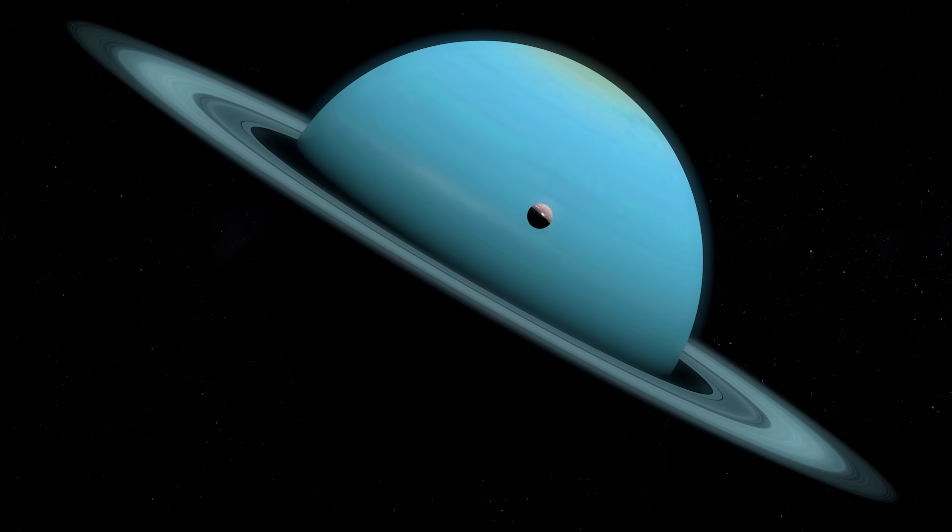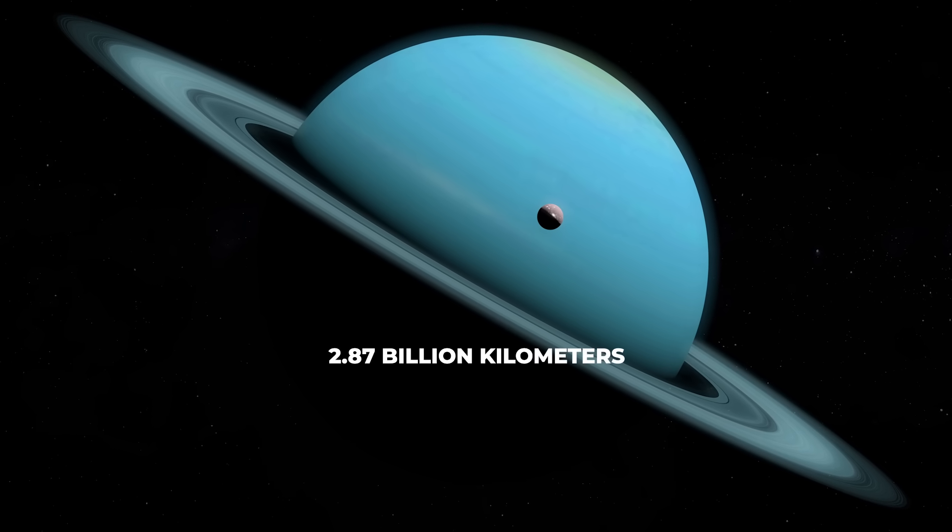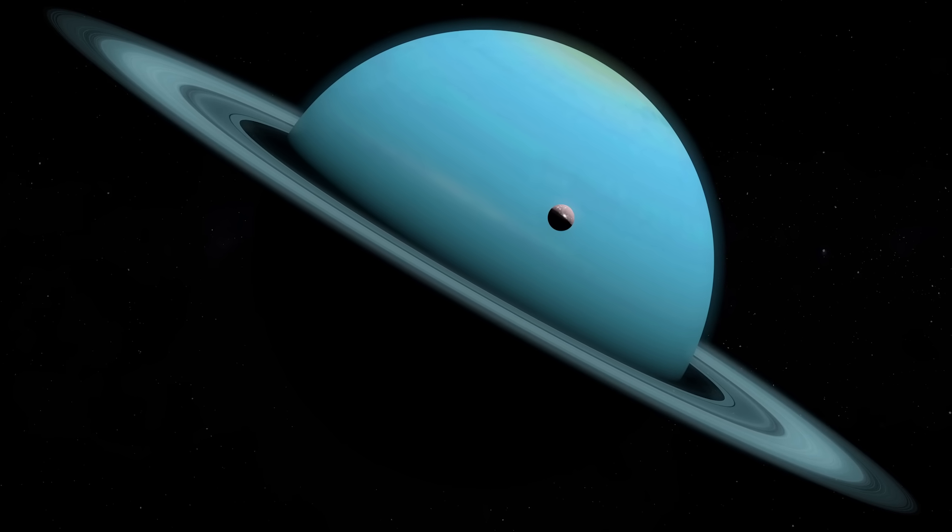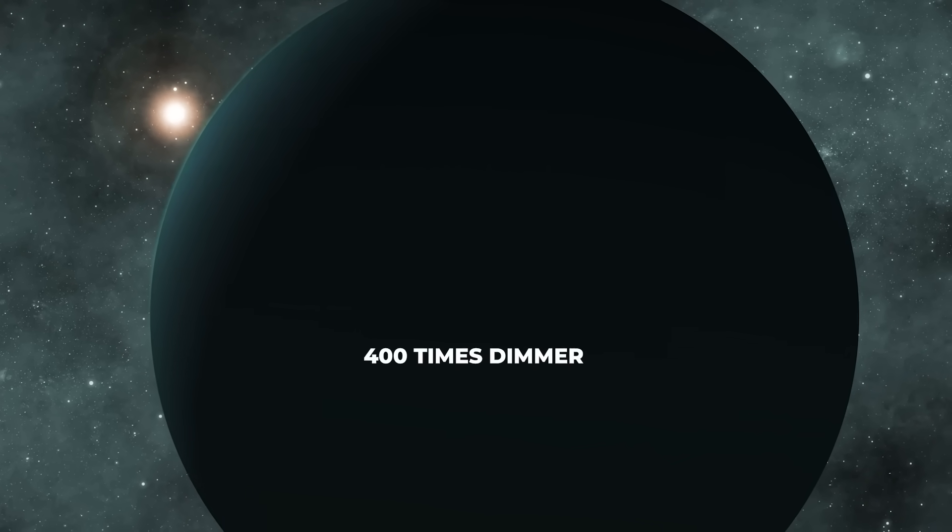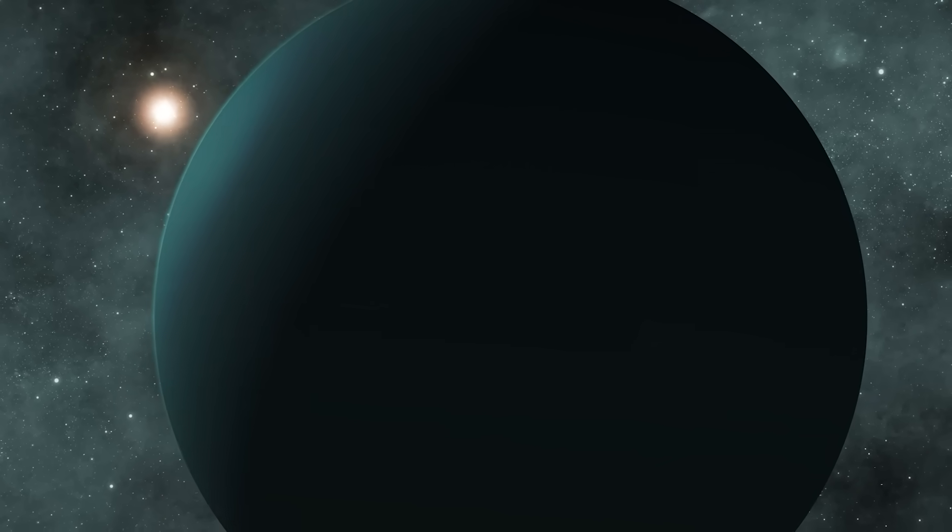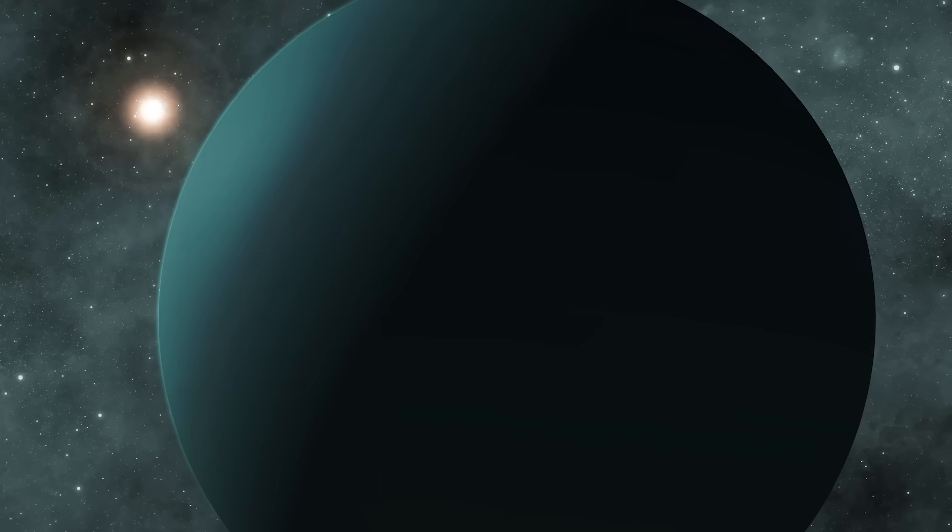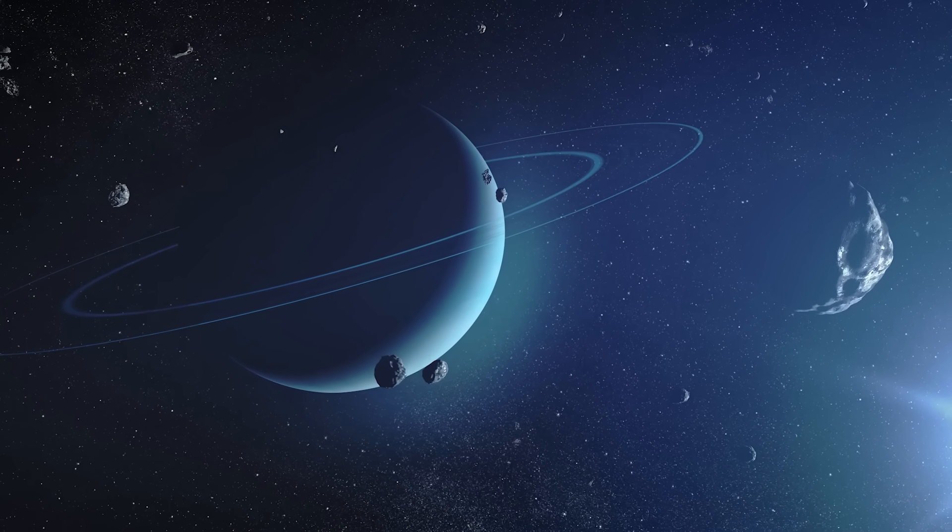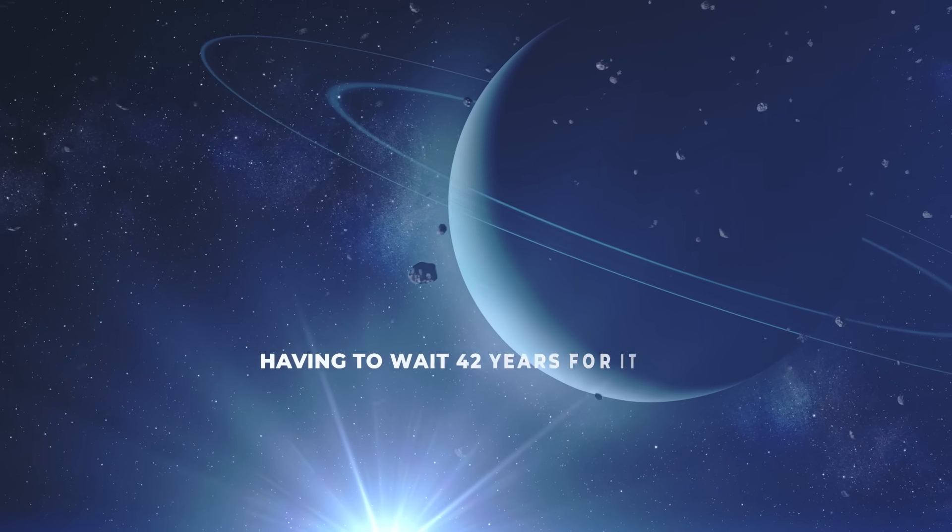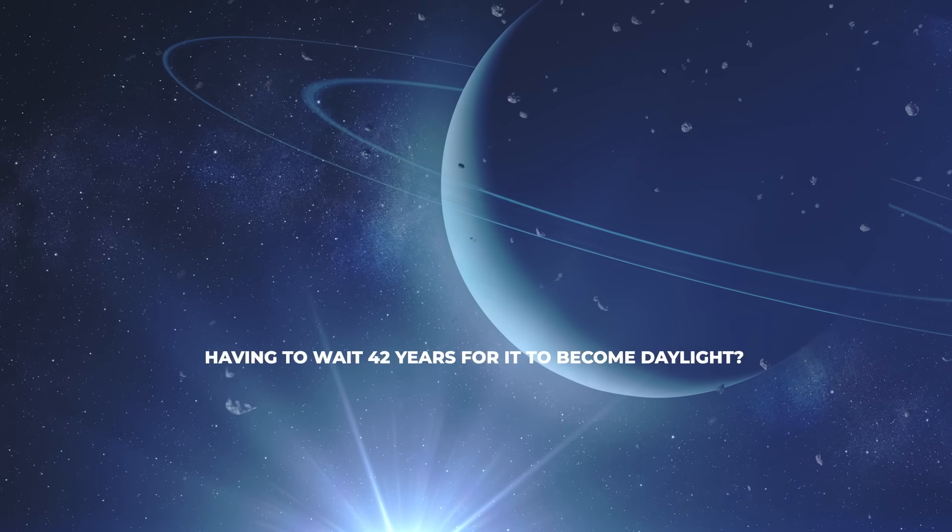The enormous distance Uranus has from the Sun, around 2.87 billion kilometers, also plays a role. The sunlight that reaches Uranus is 400 times dimmer than we receive on Earth, making even the illuminated days dark and cold. Could we ever imagine living in a world where dawn takes decades? Can you imagine having to wait 42 years for it to become daylight?